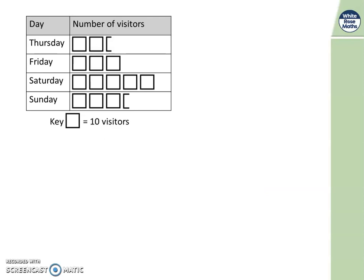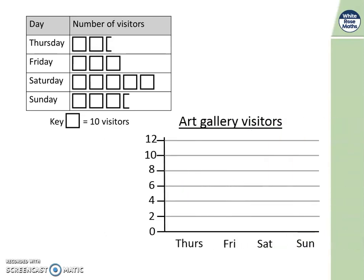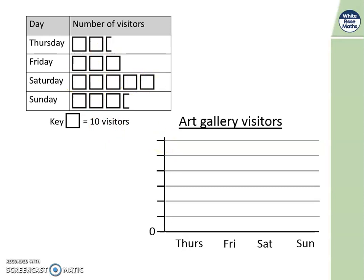Let's have a look at how we can take this pictogram and use the information to build a bar chart. Here is a bar chart ready to use. We have a title - Art Gallery Visitors - and at the bottom Thursday, Friday, Saturday, Sunday. But the numbers only went up to 12 before, and we can see Saturday needs to go up to 50. Going up in tens is a really good way because 50 will fit.